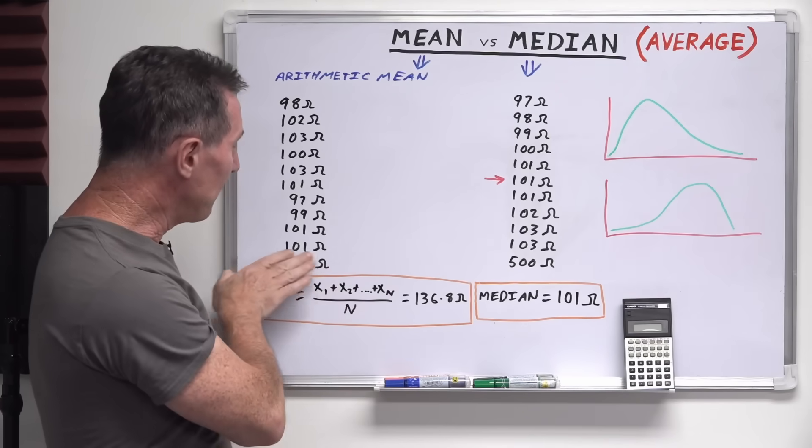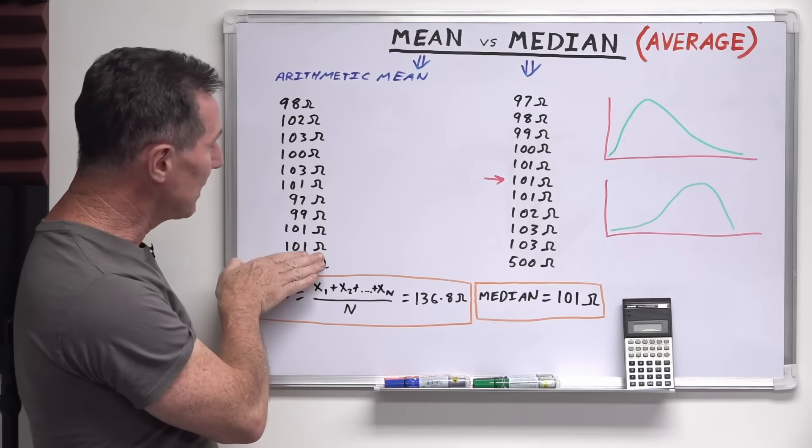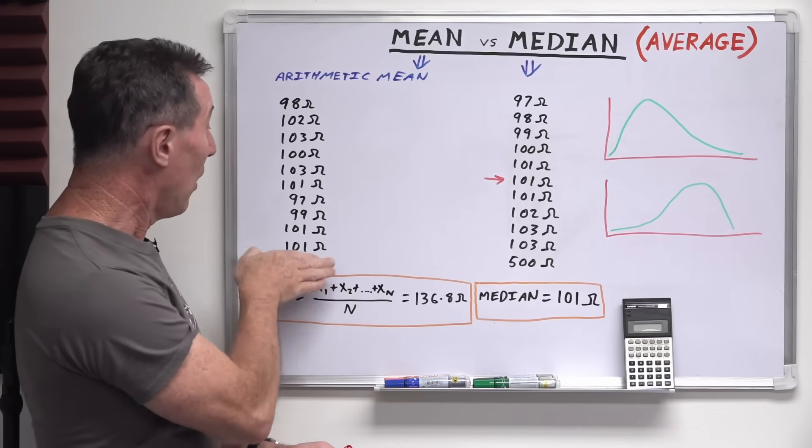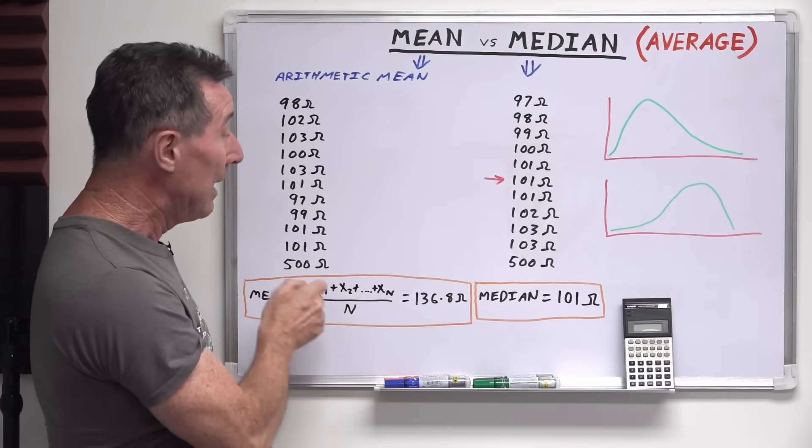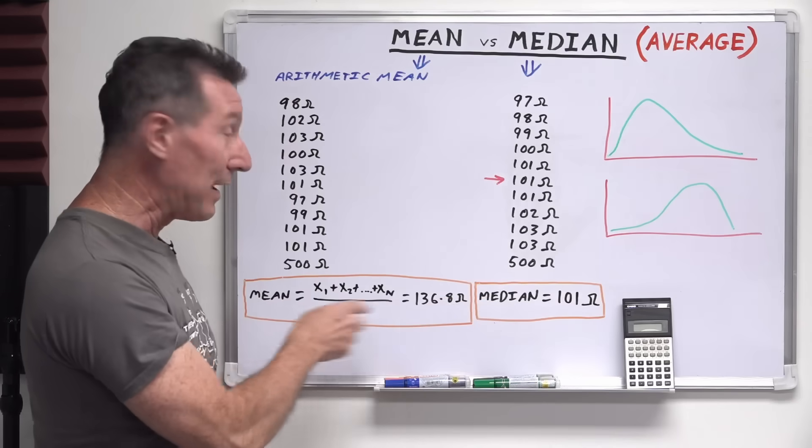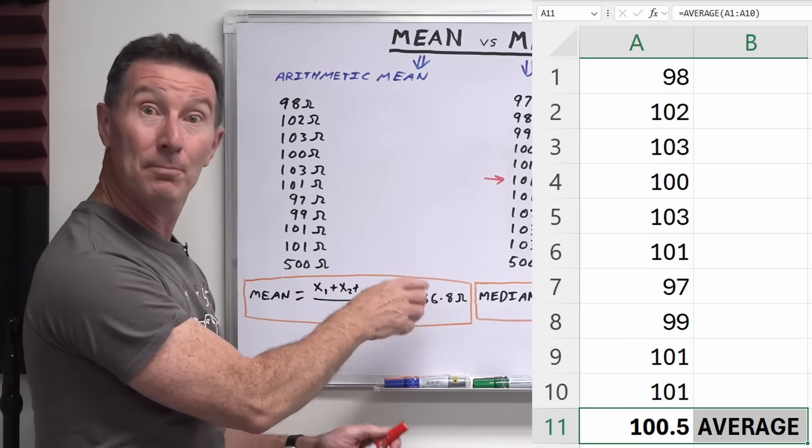So what would have happened over here to the mean if we'd actually removed this data point, this extreme outlier one? Well, run the numbers, we've got 10 of them there, and you'll find that the mean instead of being the median of 101, the mean is actually 100.5.